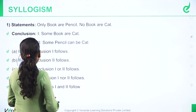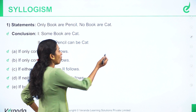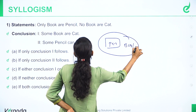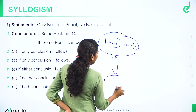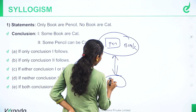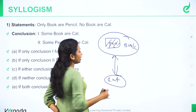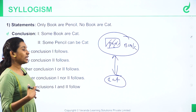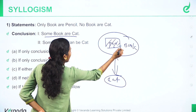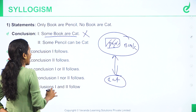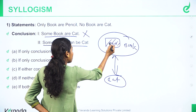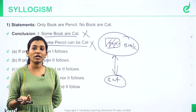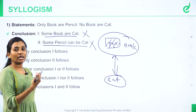First question: Only books are pencils, meaning all pencils are books. No book is a cat. Some pencils can be cats — that is a possibility — or it can be no relation. The possibility exists but saying some pencils are cats with certainty is wrong.